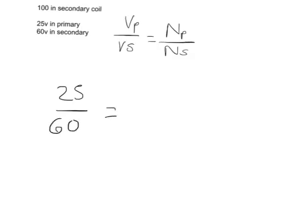And that is equal to the number of coils in the secondary, which we know to be 100. Now what we're trying to find out is this figure just here. We're trying to find out NP, so the number of coils in the secondary, sorry, in the primary coil.